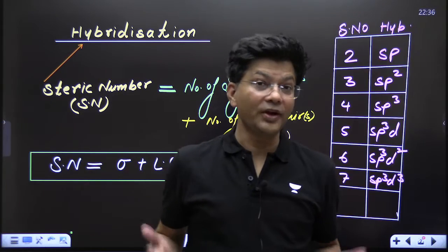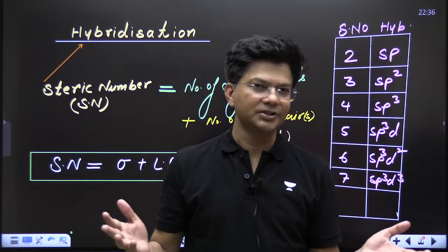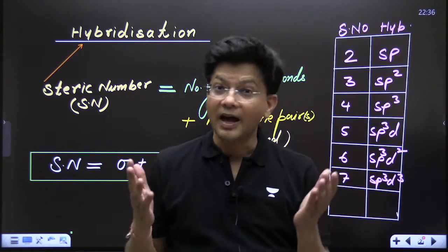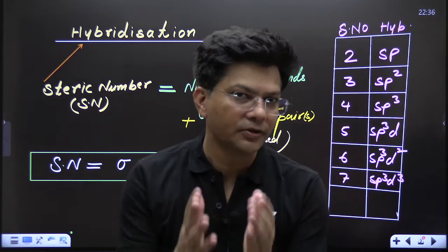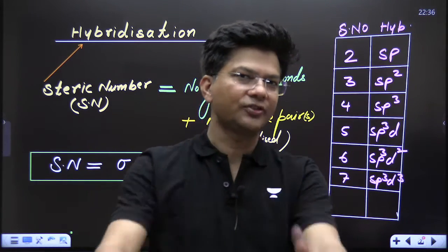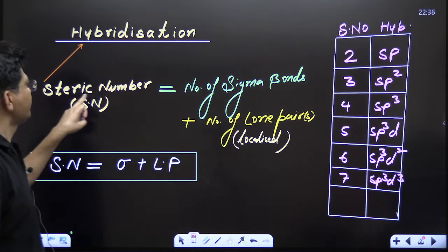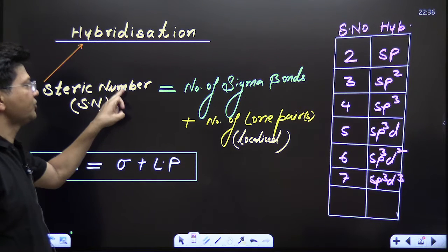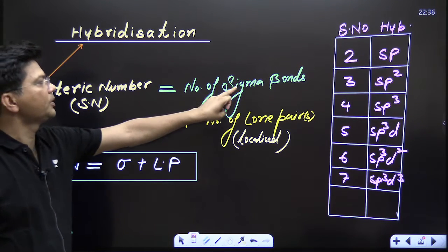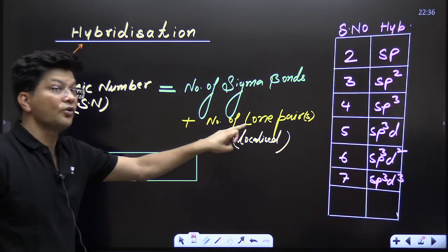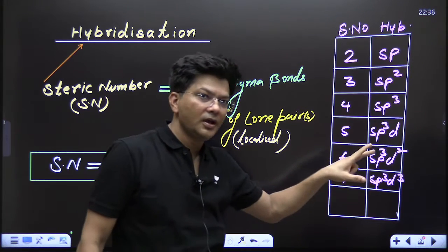Today we are going to deal with hybridization. Hybridization is the backbone of chemical bonding. Hybridization requires the steric number, and steric number is equal to the number of sigma bonds plus the number of lone pairs.